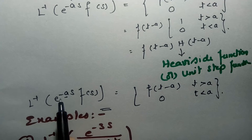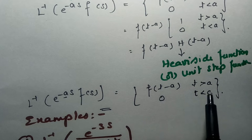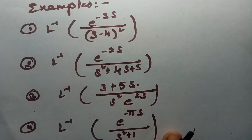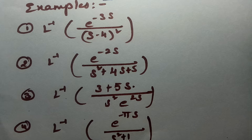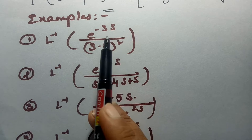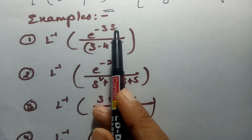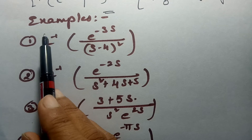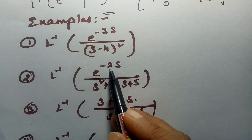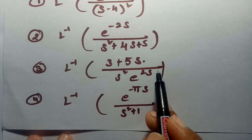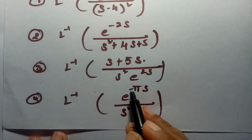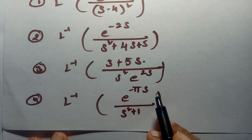The final second shifting theorem states: inverse Laplace transform of e^(-as)·F(s) is f(t-a) for t greater than a and 0 if t less than a. Whenever the question is of the form e^(-as), we have to choose the second shifting theorem from inverse Laplace. For example, if you see e^(2s) in the denominator, bringing it to the numerator gives e^(-2s), which is still of the e^(-as) form, so we use the second shifting theorem.